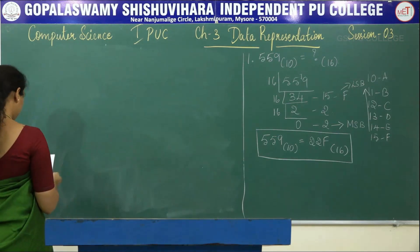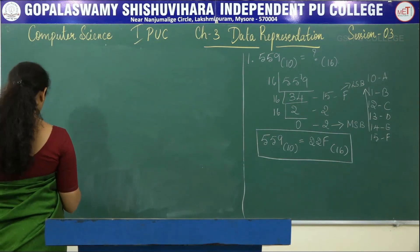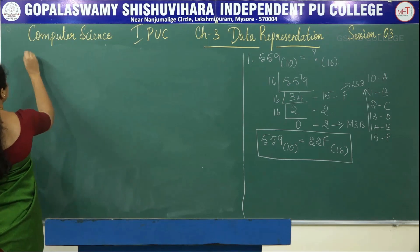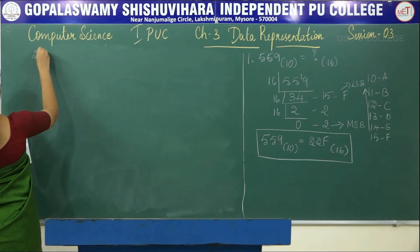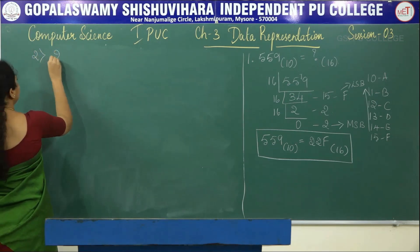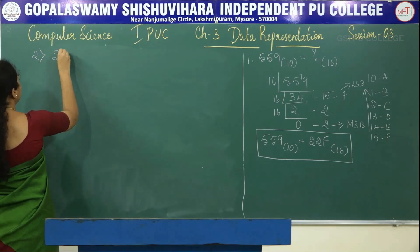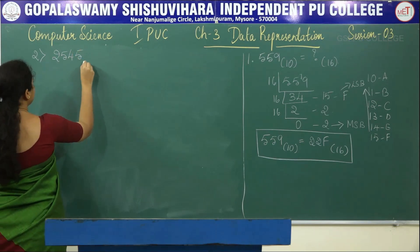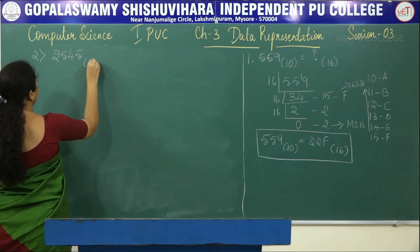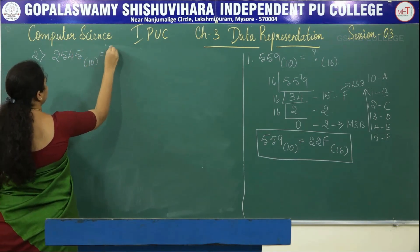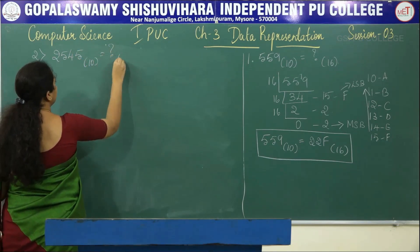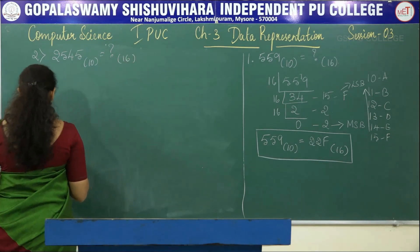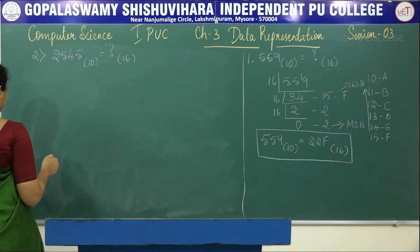Problem number 2: 2545 base 10. Convert it into the hexadecimal number system.